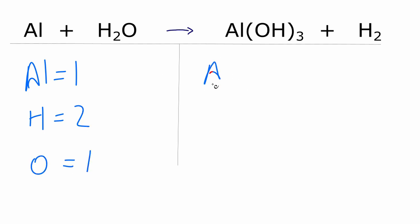On the product side, aluminum, I have one, and then for the hydrogens, I have three times the one, so I have three of those, but don't forget these hydrogens out here, and that gives us five hydrogens.